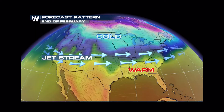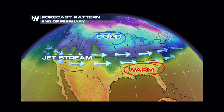The horizontal temperature difference is the only reason why jet streams move so fast across the earth. The bigger the difference between the warm and the cold air, the faster the jet stream will flow.